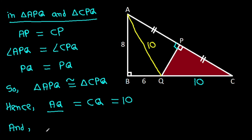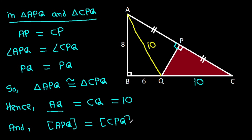And area of triangle APQ will be equal to area of triangle CPQ. Suppose if this area is A, then the other area will also be A.